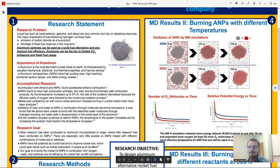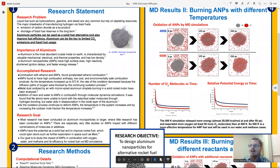So why aluminum? Aluminum is the most abundant crystal metal on earth. It is characterized by valuable mechanical, electrical, and thermal properties and also has a low density. Aluminum nanoparticles or ANPs have high surface area and very high reactivity which cause short ignition delays.